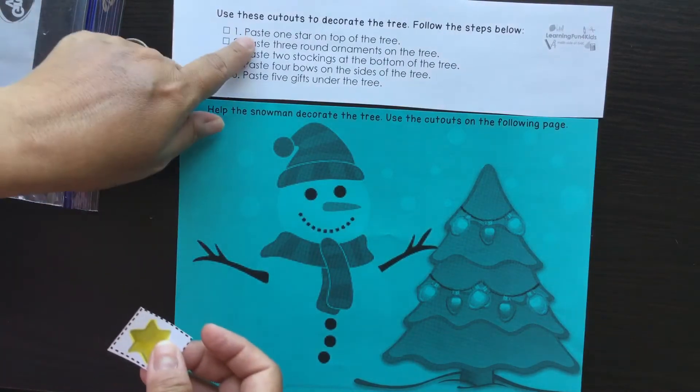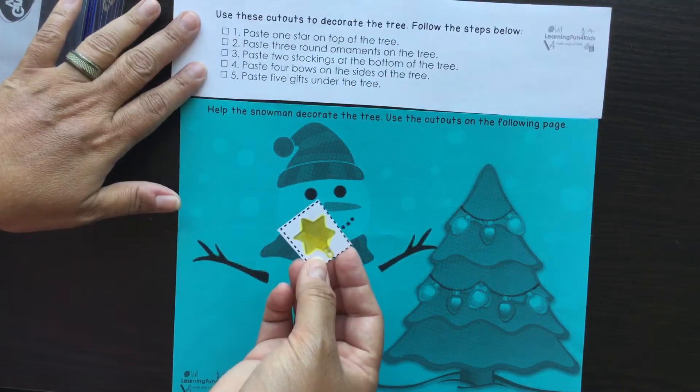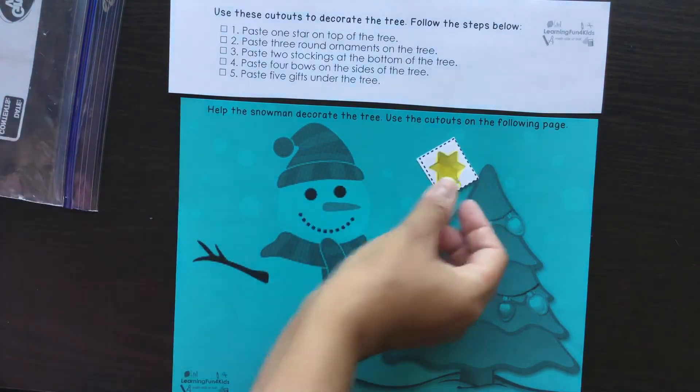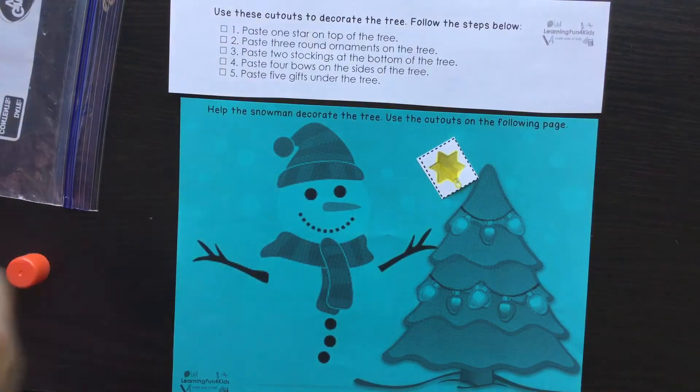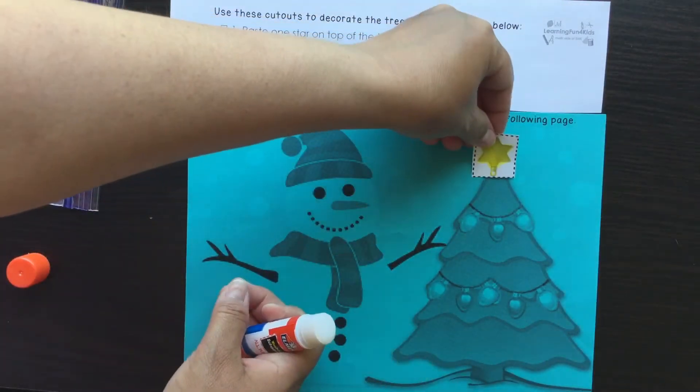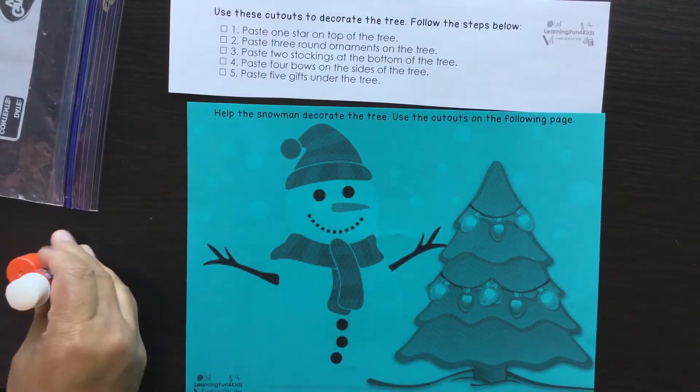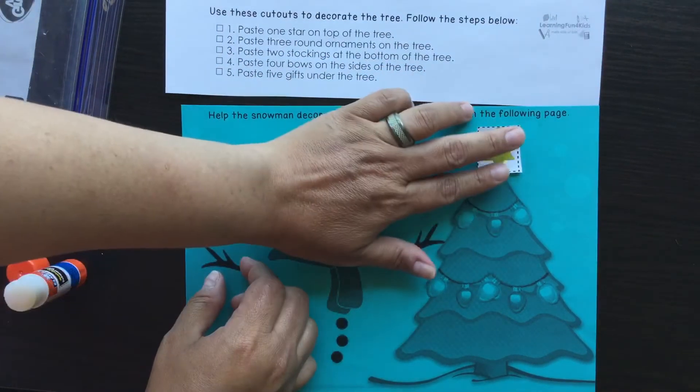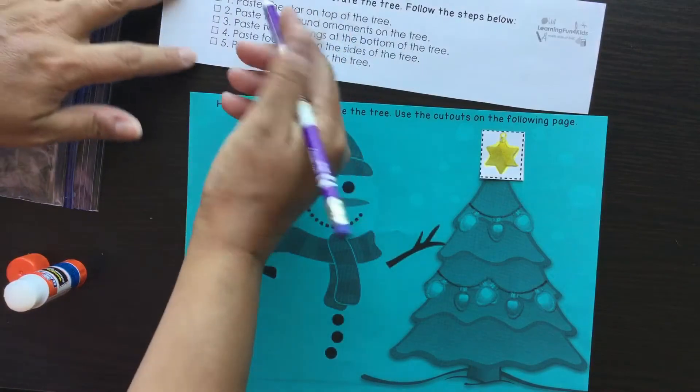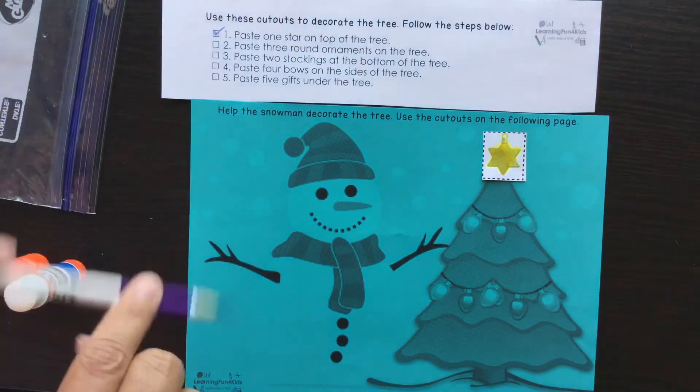The first part says paste one star on top of the tree. So I have my star that I already cut out, it comes on the bottom of the sheet. It has all these small cutouts that you can use which I will paste on here. You can paste it this way, you can paste it this way if you wanted to, however you want to see it fit. So that is on top of the tree. Then what you do is you're going to check it off or you can color it in however you wanted to.